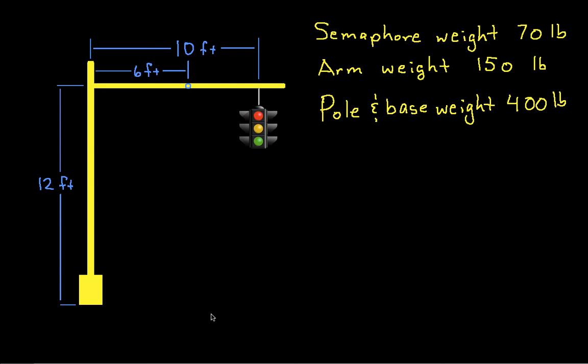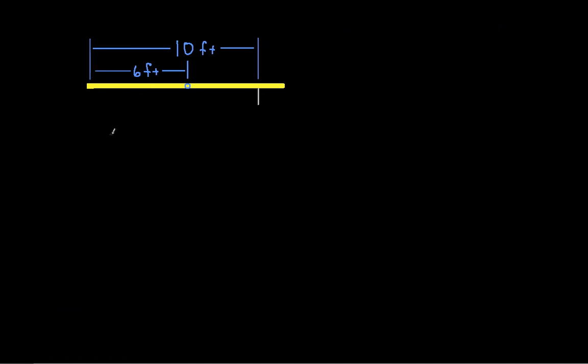Obviously the first thing we want to do is come up with a free body diagram. Since we want to see the forces and the couple joining the arm to the pole, we're going to need to create a free body diagram of the arm alone. So let's take this and chop it right here, and when we do that, we get this as our free body.